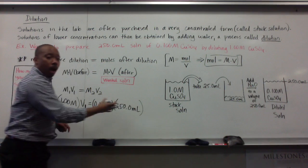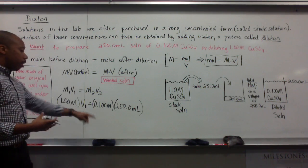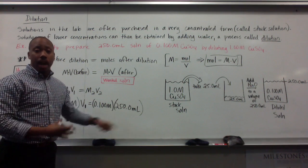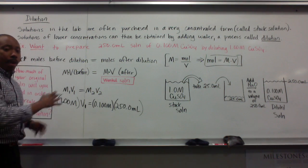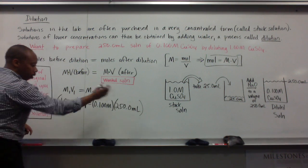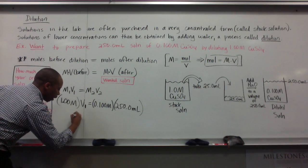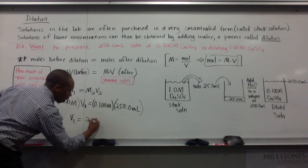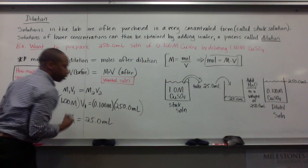And a desired volume of 250.0 milliliters. When I do dilution problems, it doesn't matter if my volume is in milliliters or liters. Either one is acceptable. I do this mathematically, multiply these two times each other, divide by one each side, V1 equals 25.0 milliliters.